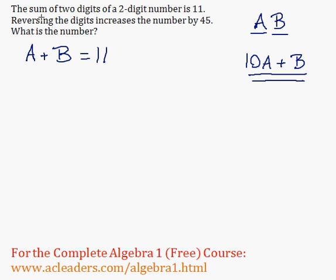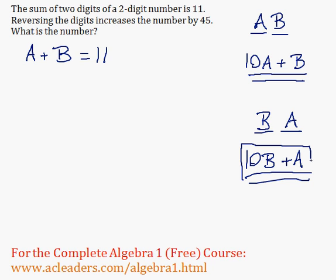But now we're saying that reversing the digits increases the number by 45. So if I reverse the digits, I have BA now. And the value of BA would be just 10B plus A, because B is now the tens digit. So I'll multiply by 10 and then I'll add A. So this is when the digits are reversed, and this is just our original number.